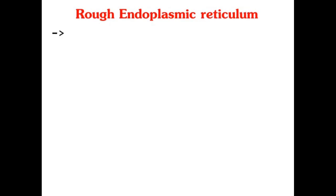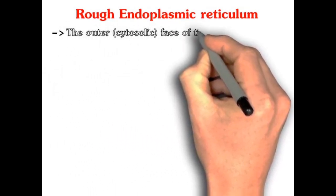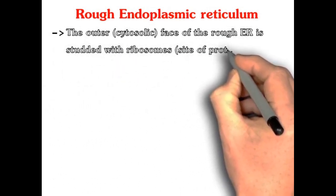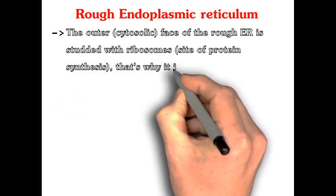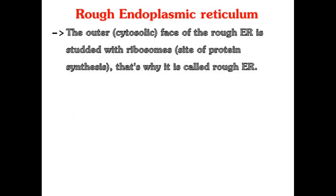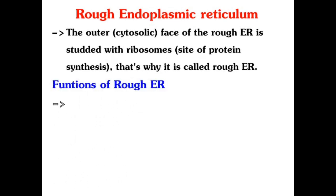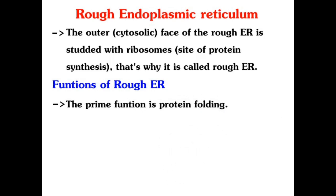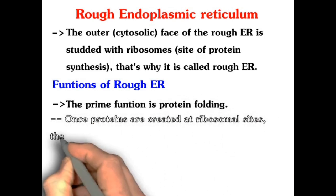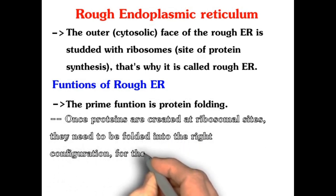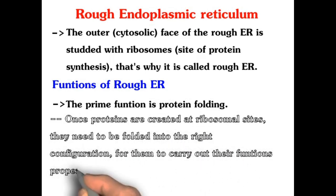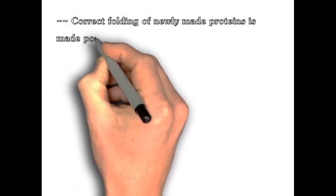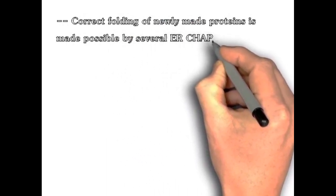Now first we see about rough endoplasmic reticulum. The outer cytosolic phase of the rough endoplasmic reticulum is studded with ribosomes, the site of protein synthesis — that's why it's called rough endoplasmic reticulum. The prime function is protein folding. Once proteins are created at ribosomal sites, they need to be folded into the right configuration for them to carry out their functions properly. Correct folding of newly made proteins is made possible by several endoplasmic reticulum chaperone proteins.